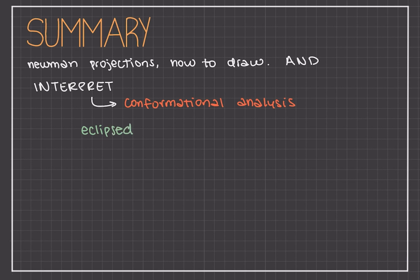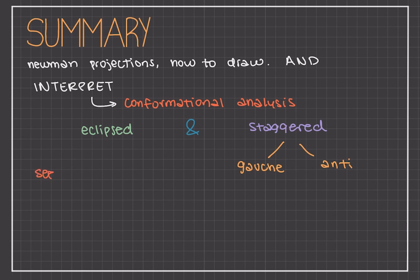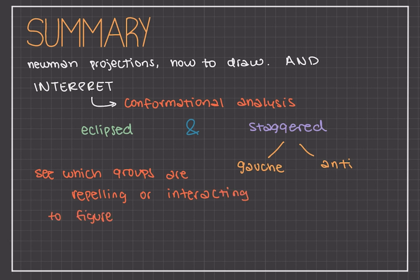In summary, we learned about two overall types of conformations: eclipsed and staggered. Within staggered there is the anti and gauche formation. We also discussed the energies of these different conformations — you can find the relative energy by looking at where each group is, where the bonds are, and how these bonds and groups repel each other. The eclipsed conformation is of much higher energy because the groups are repelling each other, whereas a staggered conformation has a lower energy level because there are fewer repulsions.